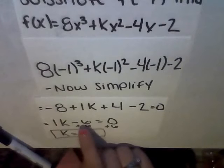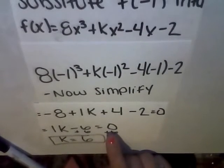So, we simplify it by adding all these digits right here and we have 1k minus 6 equals 0. So, we add the 6 to both sides and k equals 6.